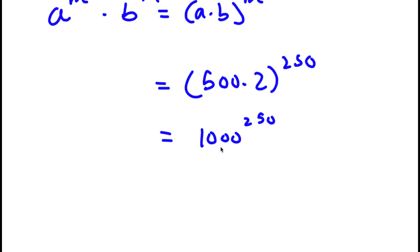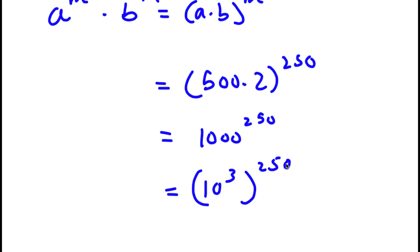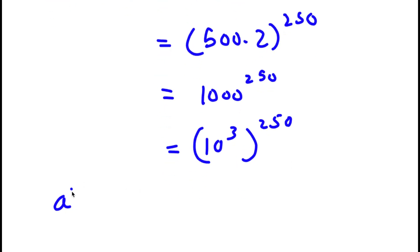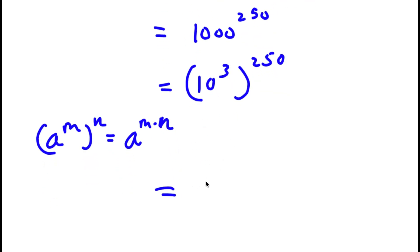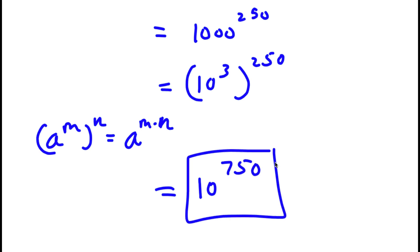Now, 1,000 is the same thing as 10 to the power of 3. So now I have 10 to the power of 3 to the power of 250. Using the rule a to the power of m to the power of n equals a to the power of m times n, that gives 10 to the power of 3 times 250, which is simply 10 to the power of 750. So this is my answer.